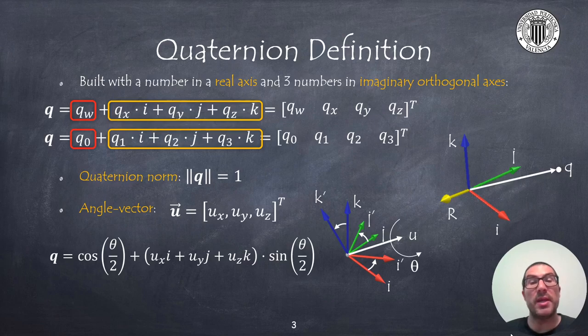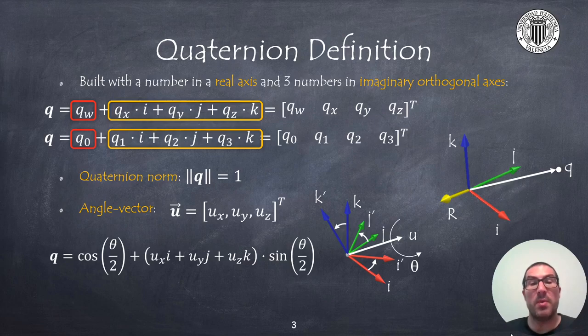We will represent the orientation with a quaternion as a vector with 4 components. Quaternions fulfill an important property: the norm of a quaternion must be 1.